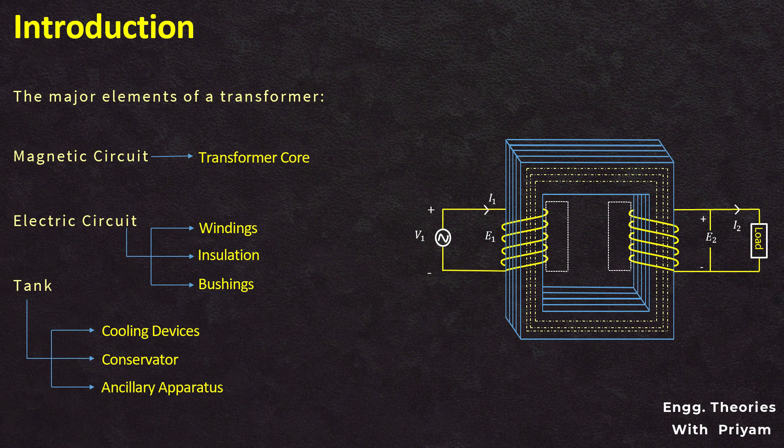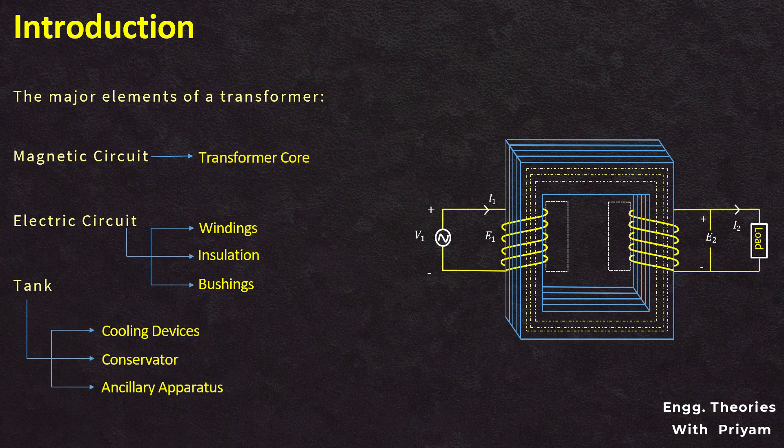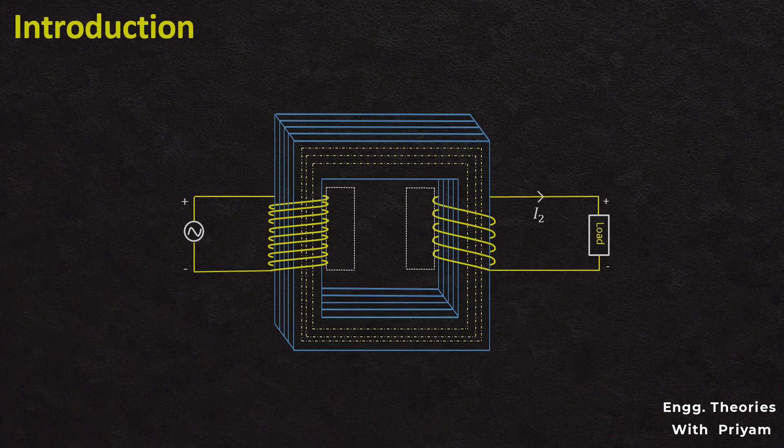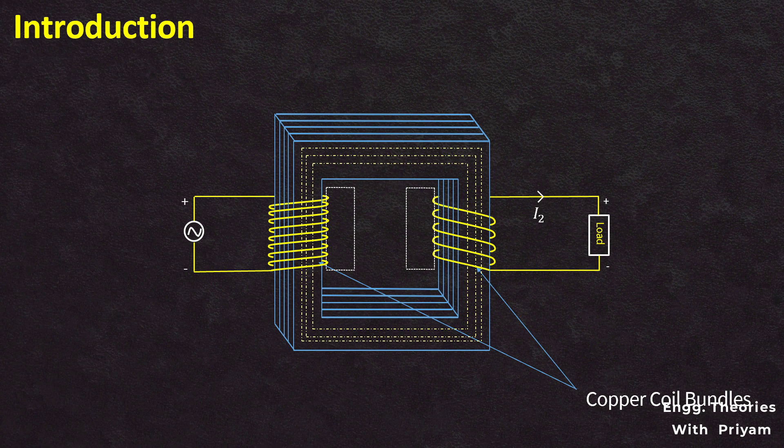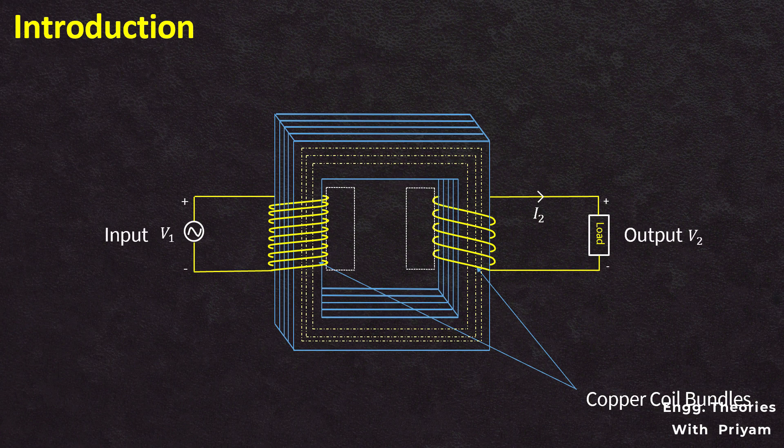Transformer windings include different rounds of copper coil bundles where every bundle is connected to form a winding. Windings mainly depend on the input-output supply, otherwise on the range of voltage. The transformer winding diagram is given below. Input-output supply voltage and the range of voltages are the two key factors that affect the winding.